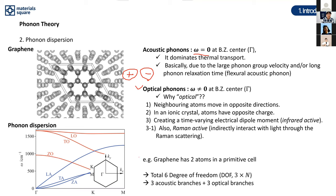As an example, graphene has two atoms in a primitive cell, giving a total of six degrees of freedom in x, y, and z directions. It therefore has three acoustic branches and three optical branches.